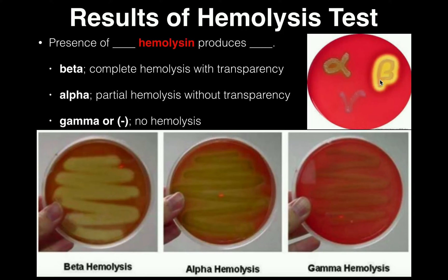We've got an alpha pattern and a beta pattern visible here. When we have beta hemolysis, this means we have complete hemolysis — the bacteria are completely able to destroy the red blood cells in the area around the streak, and we're also going to have transparency. If you hold the blood agar up to the light and you can see directly through the plate in the area around the streak, then you have beta hemolysis. That's complete hemolysis with transparency.